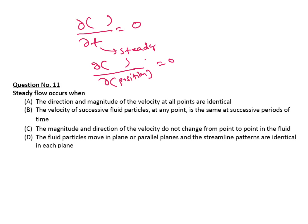Direction and magnitude of velocity at all points. All points means position, so not for sure. Velocity of successive fluid particles at any point is the same at successive periods of time. Yes, this is correct with time. Then the magnitude and direction of velocity do not change from point to point. Point to point means again position, not possible. Streamline patterns are identical in each plane. Time not mentioned, so D also not possible. B is your correct answer.